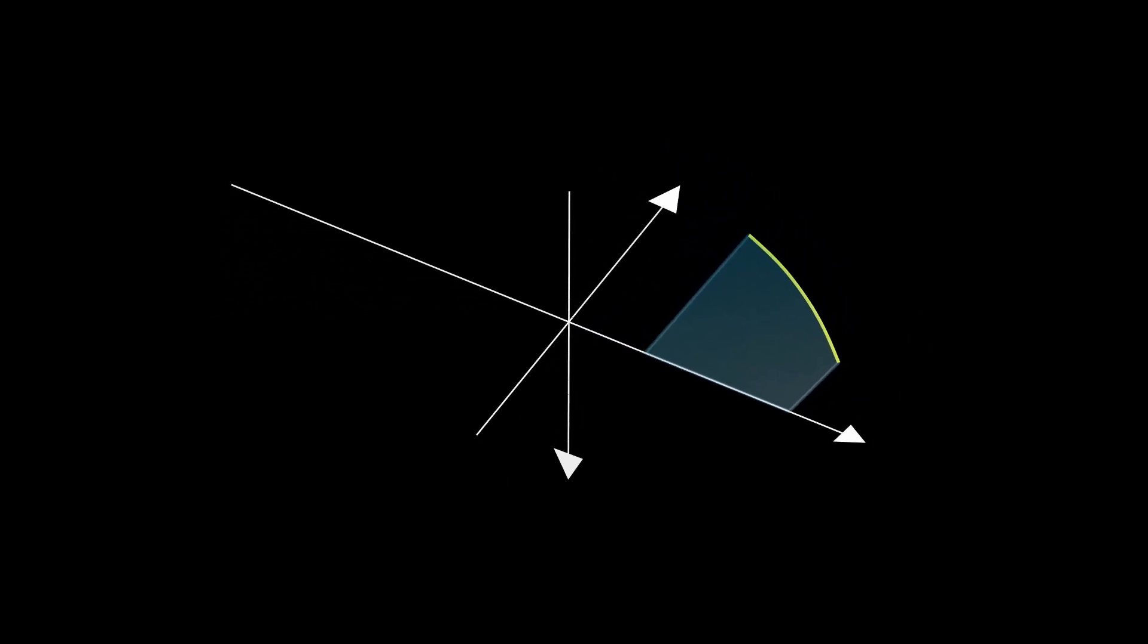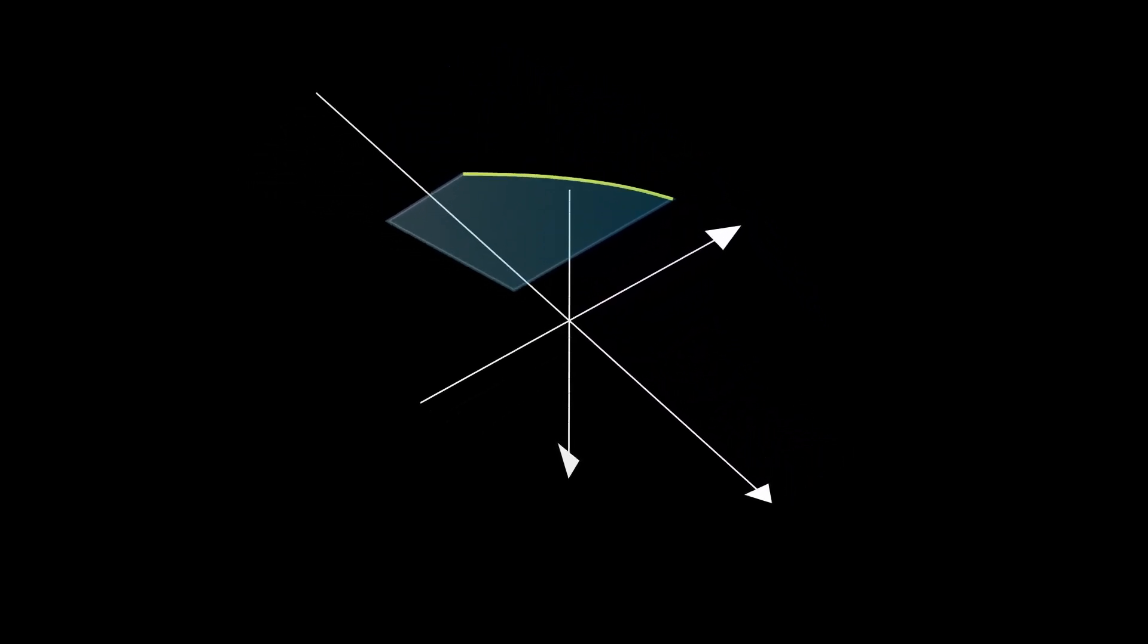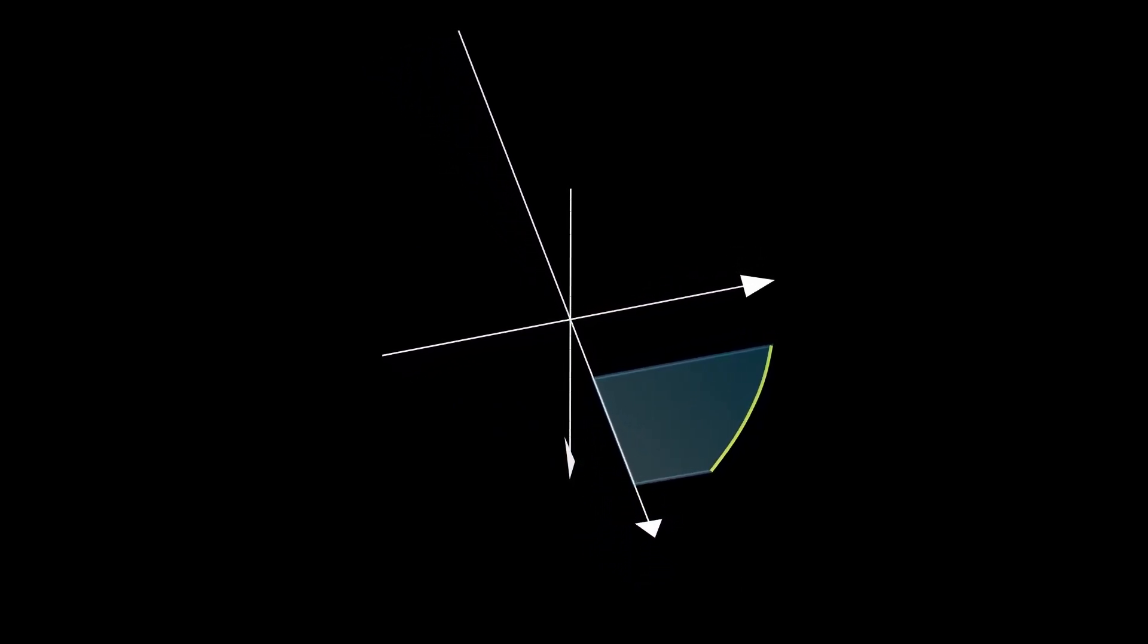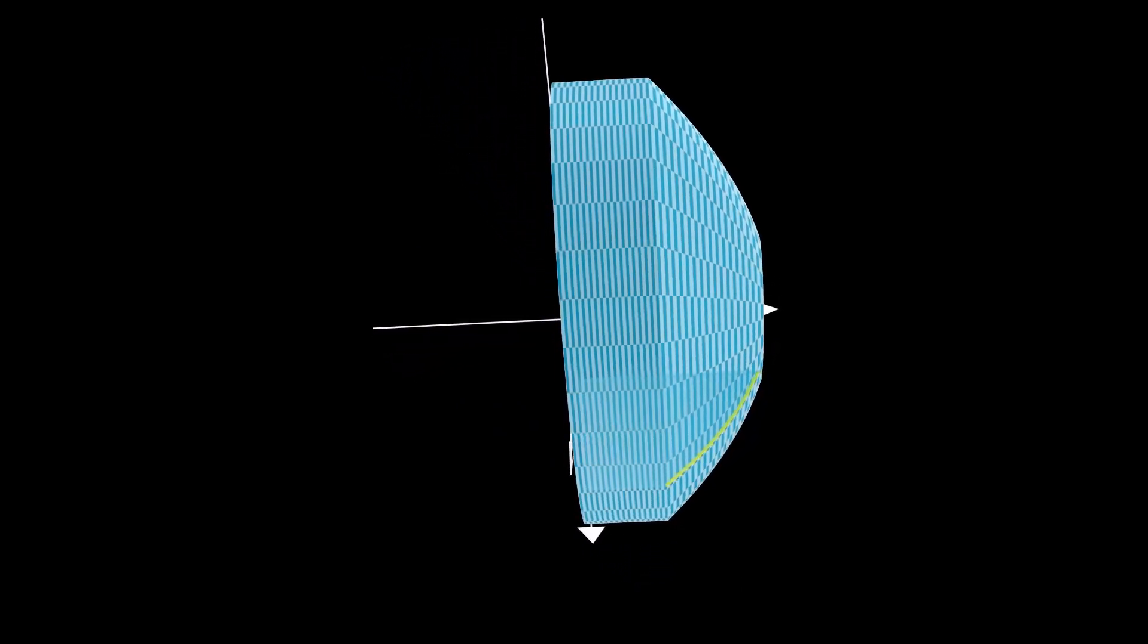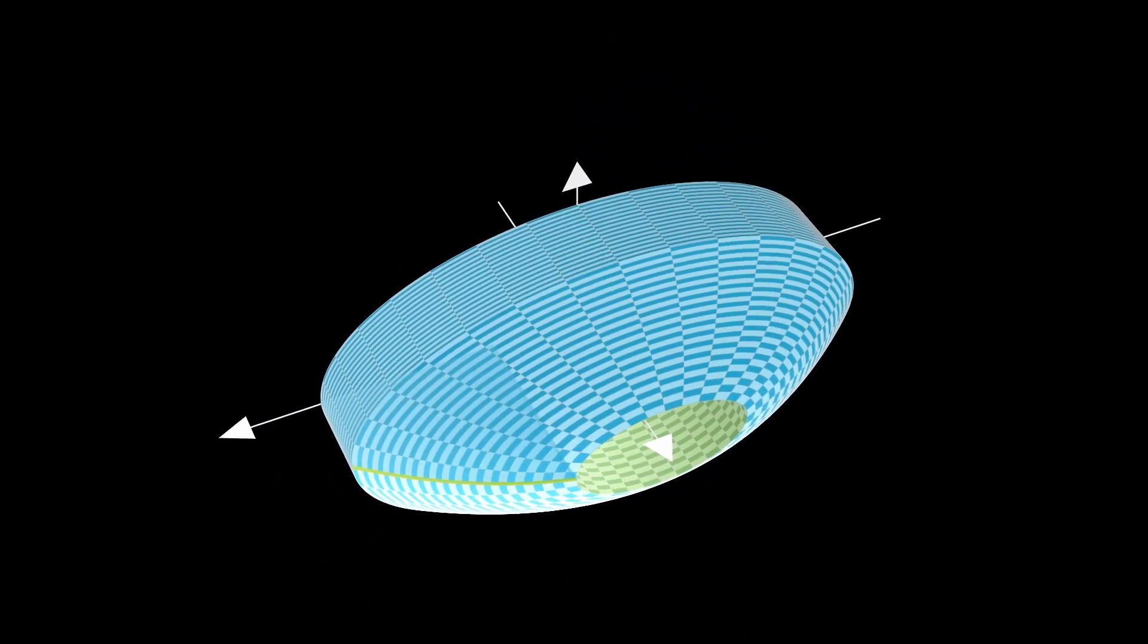We'll now rotate this region about the y-axis. So we can see here that we can generate different solids of revolution with different volumes, even as we use the same two-dimensional region and rotate it about different axes of revolution.